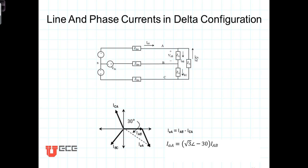As we pointed out before, in a delta connected load, or a delta connection, the line voltage, the voltage between two transmission lines, is applied across the phase itself so that the phase voltage and the line voltage are the same.